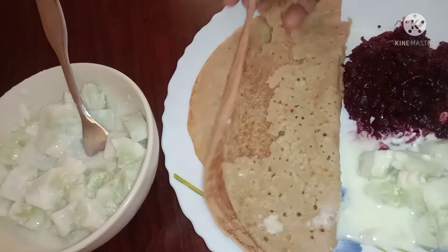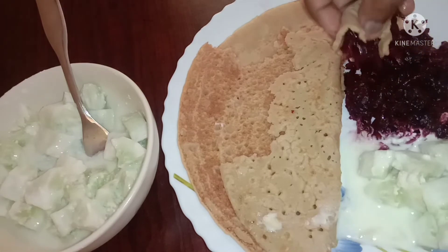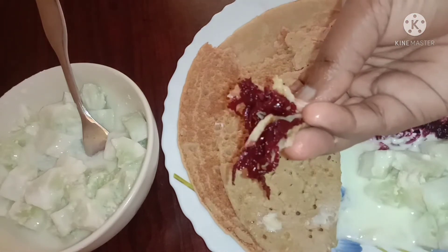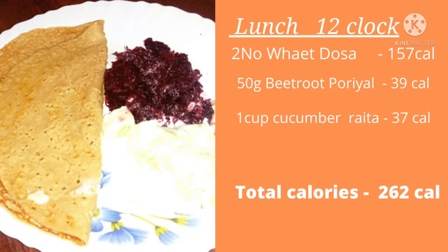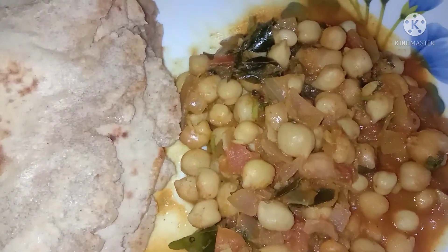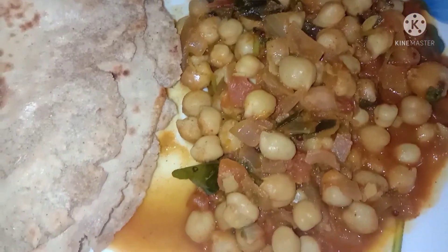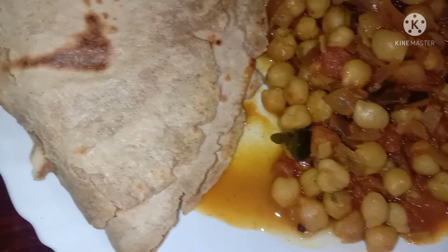This is the taste of the soup. This is soft. Add 250 calories. 50 grams of beetroot, add 1 cup of cucumber, that is 262 calories. Add 2 chapati, add 100 grams of beetroot.